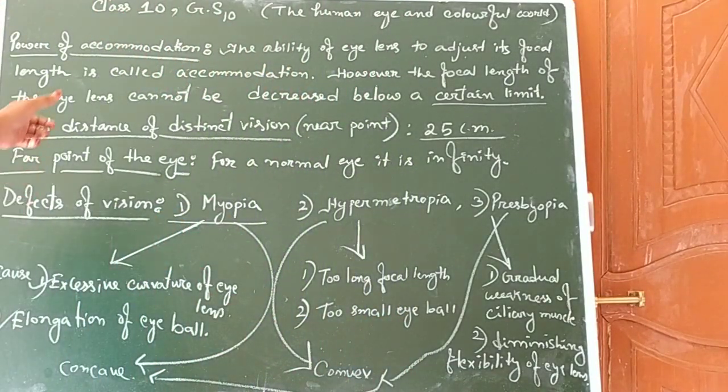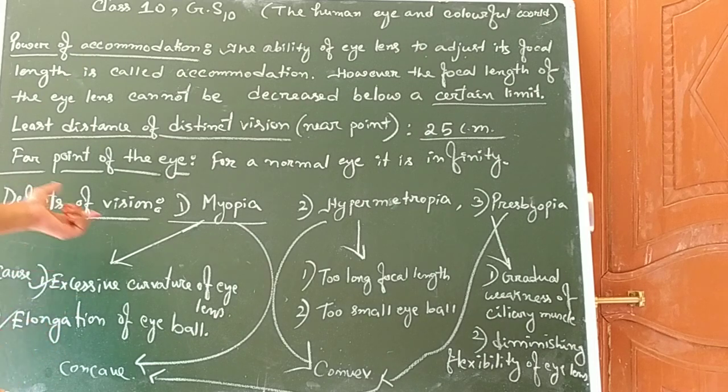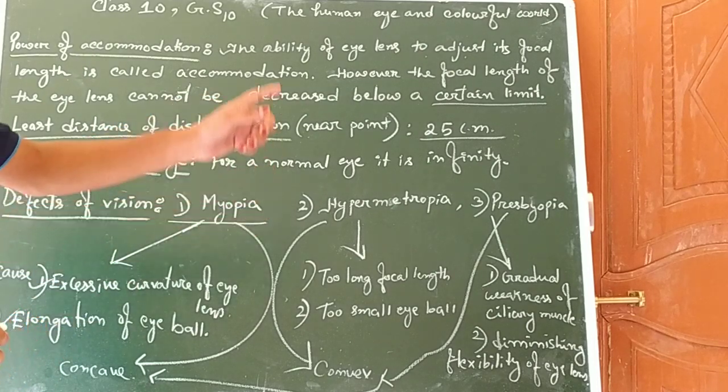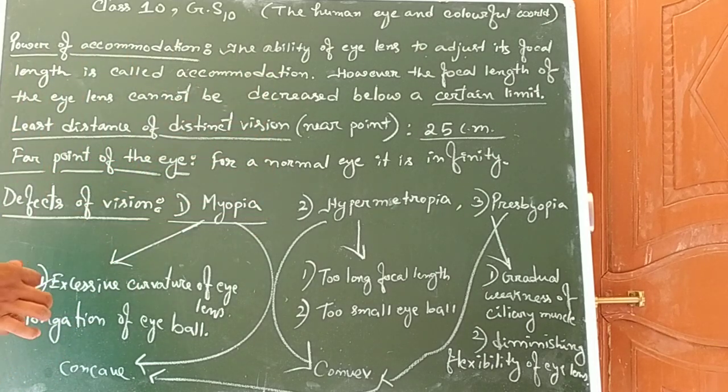Today's topic about the human eye — the defects of vision: myopia, hypermetropia, and presbyopia — is finished.